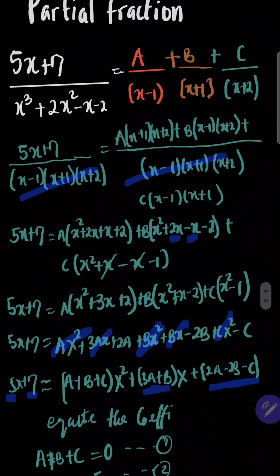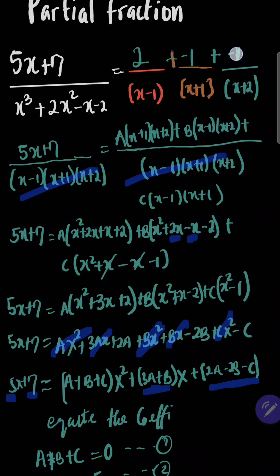So coming back up, we have gotten the values: A equals 2, B equals negative 1, and C equals negative 1. So this is the decomposition of the partial fraction. Thank you very much for watching — please don't forget to subscribe to my channel. See you next time.